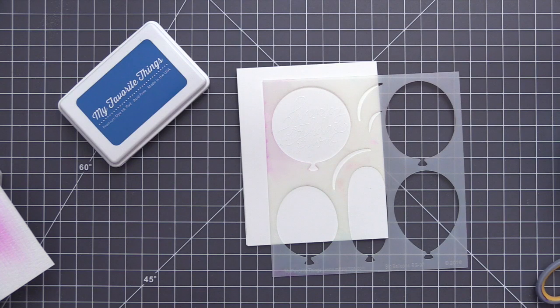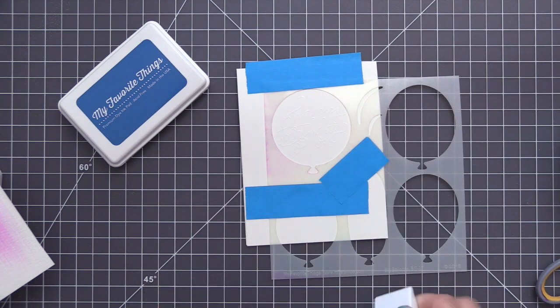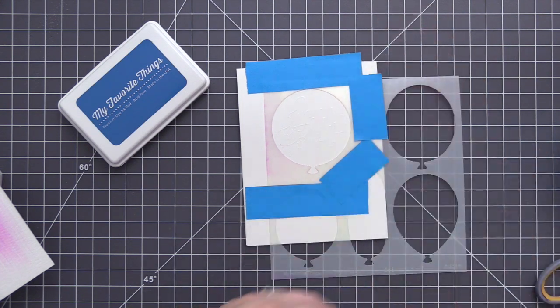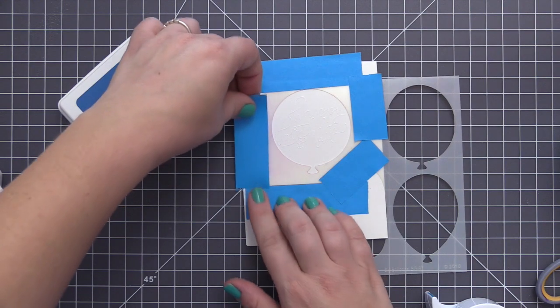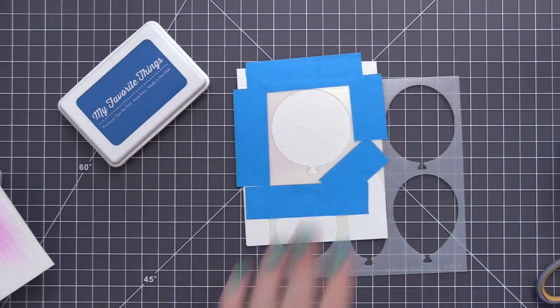So for this card, we're going to use the birthday balloon stencil and we're going to do some direct inking onto the card. I'm adding the stencil right over top of that sentiment, which is really hard to see on the camera because it is the white on white. But you're going to see as I start to add the ink that that sentiment is going to resist the ink and it's going to stand out from the balloon.